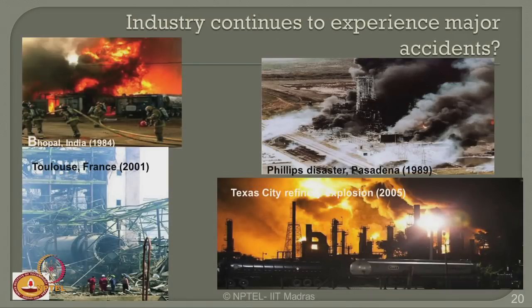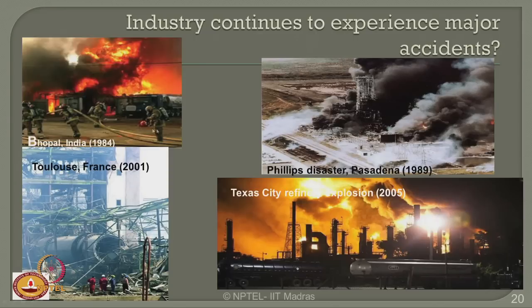The oil and gas industry continues to experience major accidents very frequently: Bhopal 1984, Phillips disaster Pasadena 1989, Texas City refinery blowup 2005, Toulouse France 2001, and the Piper disaster. These are noticeable accidents which have challenged the image of companies working in the industry for many years. Accidents do not only bring bad economy to the industry, but also a bad name and reputation to the company owning these production units.